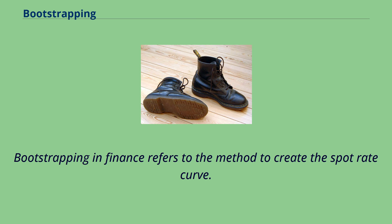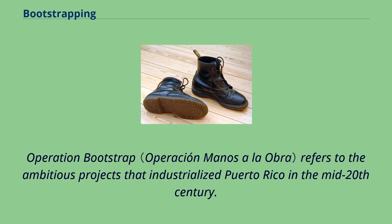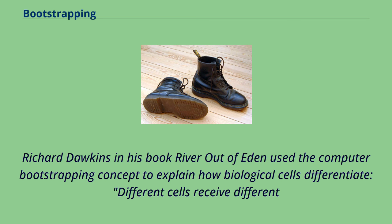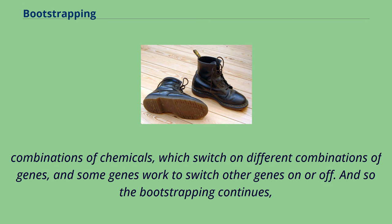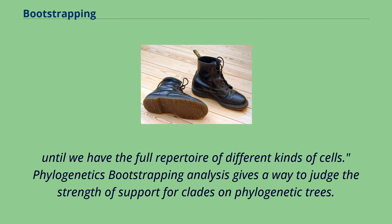Operation Bootstrap refers to the ambitious projects that industrialized Puerto Rico in the mid-20th century. Richard Dawkins in his book River Out of Eden used the computer bootstrapping concept to explain how biological cells differentiate — different cells receive different combinations of chemicals, which switch on different combinations of genes, and some genes work to switch other genes on or off. And so the bootstrapping continues until we have the full repertoire of different kinds of cells.